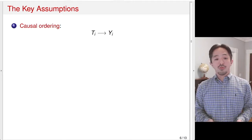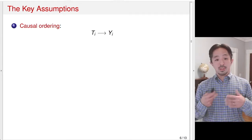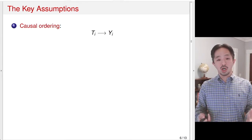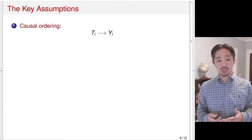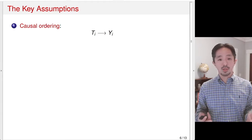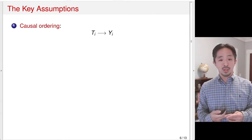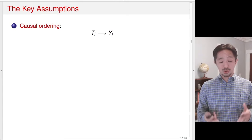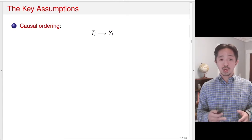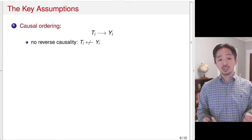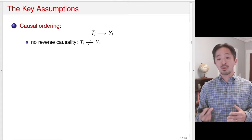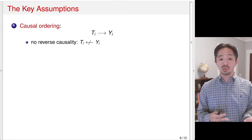It turns out that the causal effects defined earlier, we have already made some assumptions. The first assumption, which probably is already clear to you, is that we assume the treatment variable — canvassing — causes turnout, not the other way around. We call this non-reverse causality: the outcome does not cause treatment.